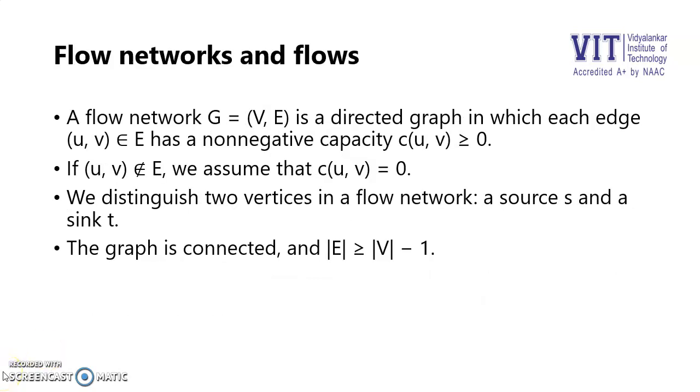Now how can we define it? A flow network, represented by any graph G with V vertices and E edges, is a directed graph where every edge between the vertex U, V will have a non-negative capacity.